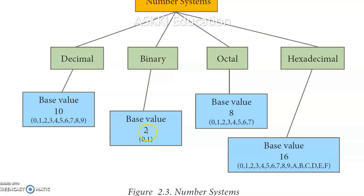The binary number system uses only 2 digits: 0 and 1. So its base value is 2. The octal number system uses digits 0 through 7 — a total of 8 digits — so its base value is 8.